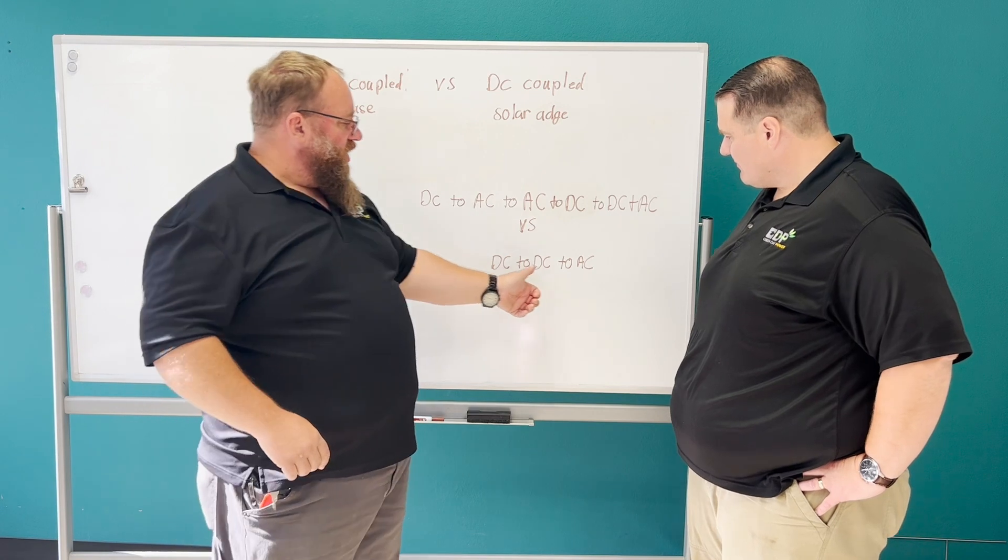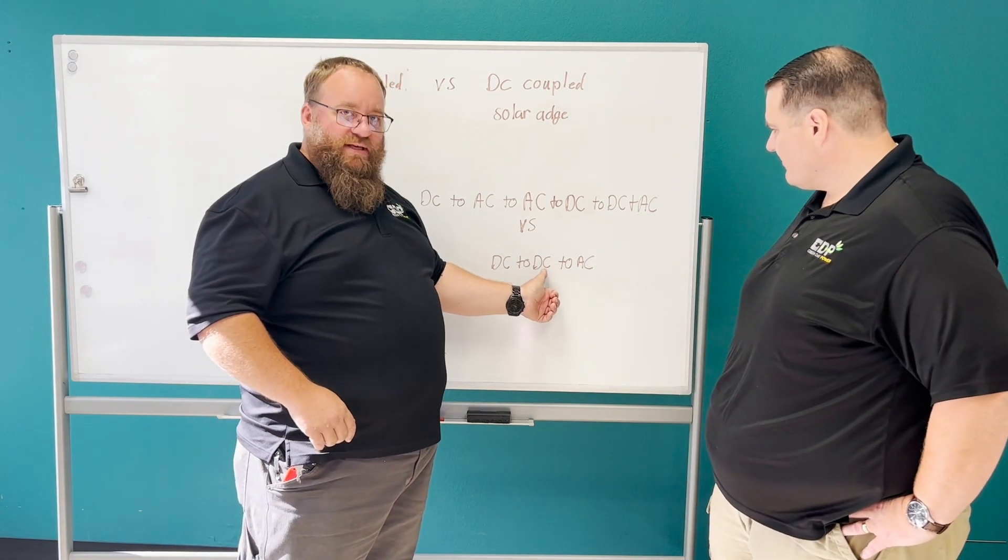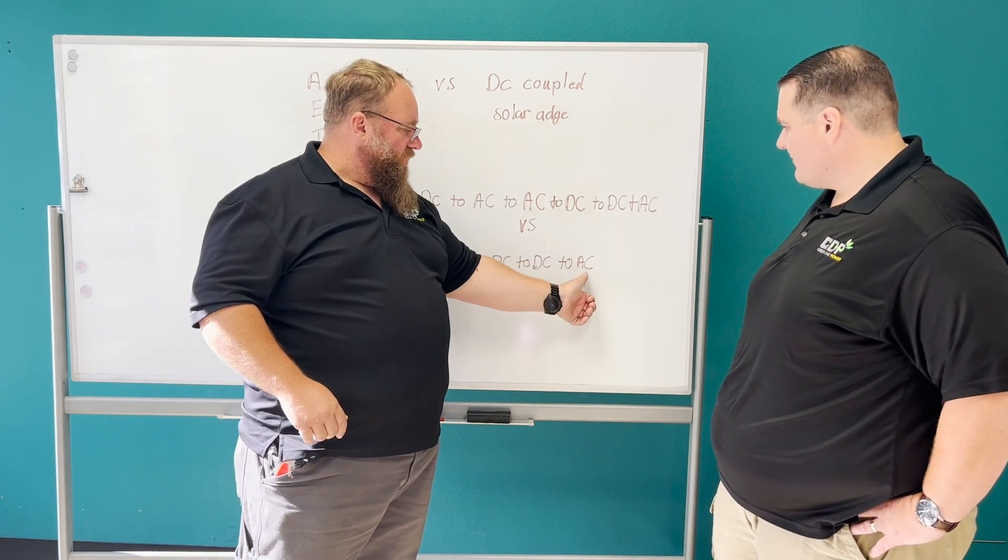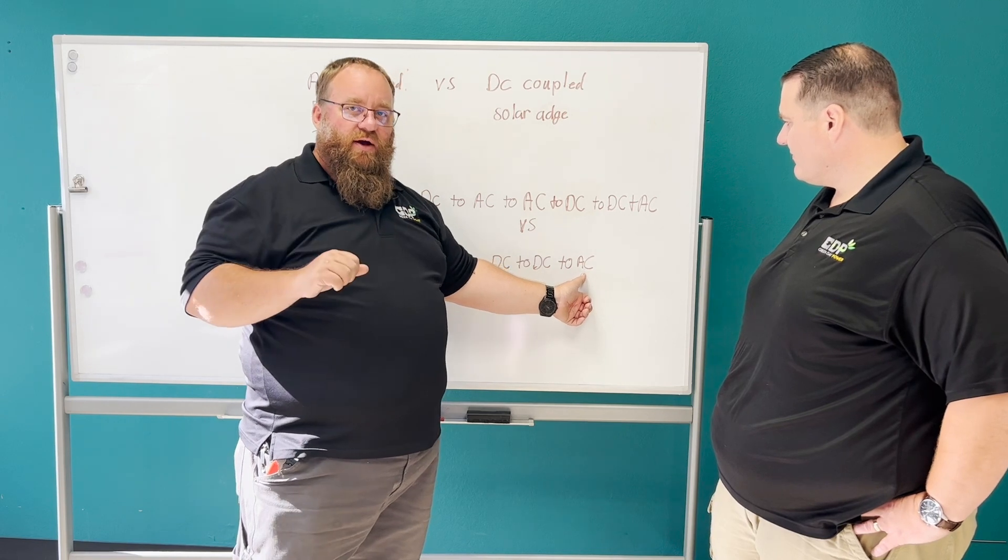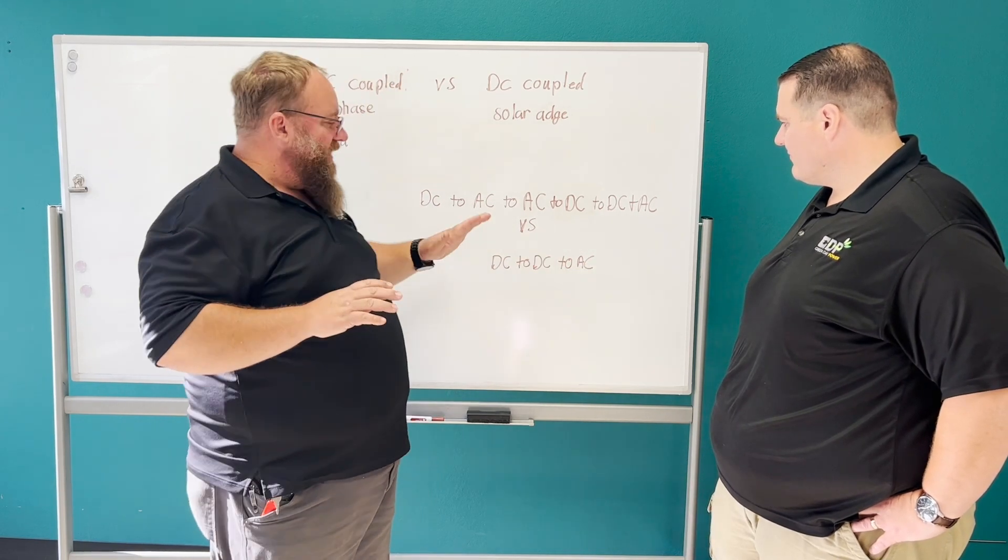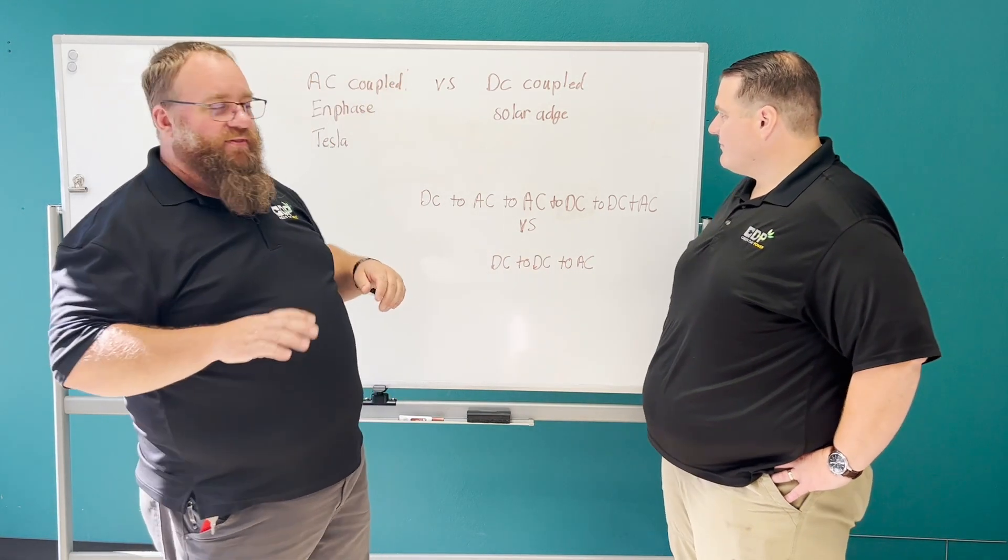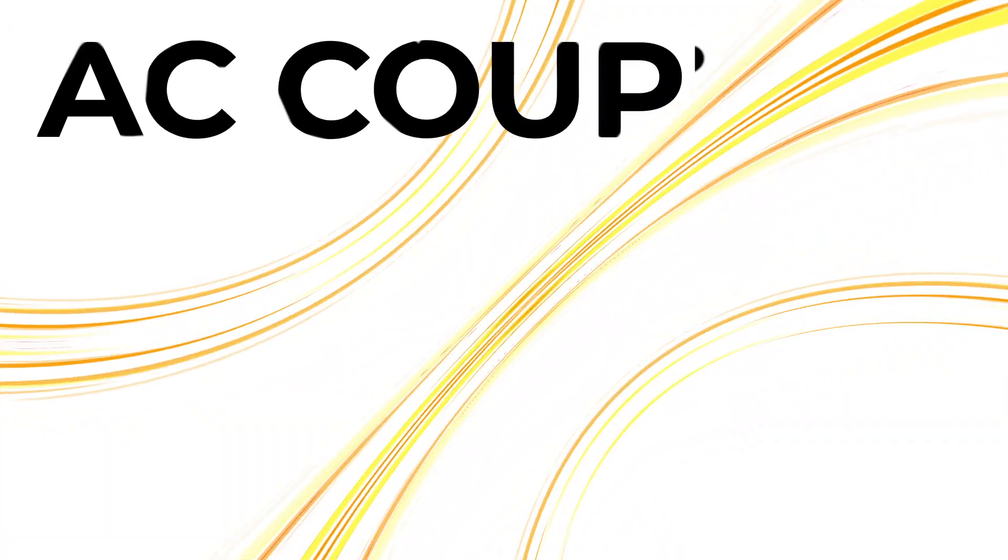Then it only converts one time from DC from the battery to AC so you can use it in your house. So real simple, absolutely the simplest system out there. Now this is where it gets confusing and where it slows down the process and makes it a little less efficient.